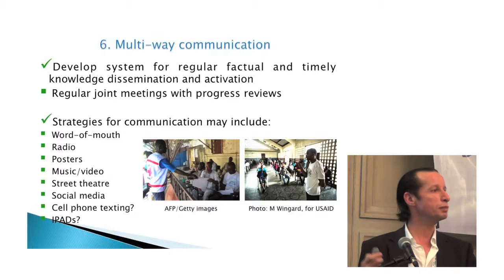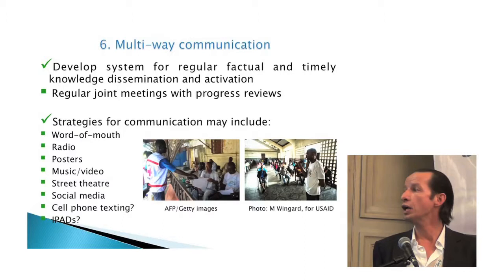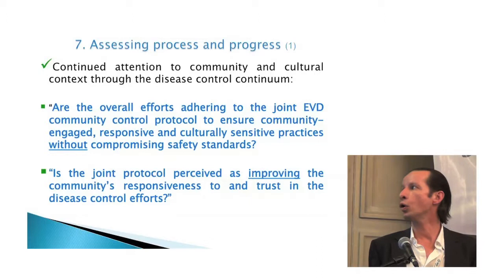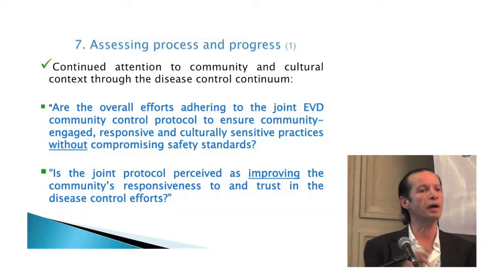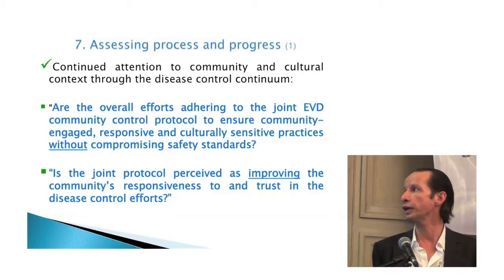Step six: multi-way communication. Make sure people can talk to you, and you know the right modes and methods. Ideas from Sierra Leone include street theater — stepping up big time now — music videos played on radio, cell phone texting, and iPads for the future. Step seven: monitoring and evaluation. Make sure there's continued attention to the community and cultural context throughout disease control efforts. The two key questions are: Are overall efforts adhering to the joint community protocol? And is the joint protocol perceived as improving the community's responsiveness and trust in disease control efforts?